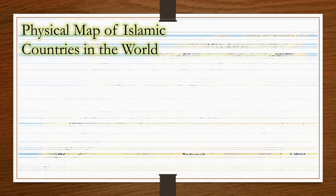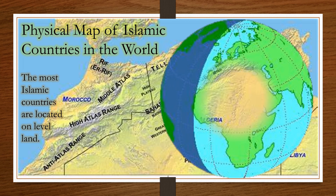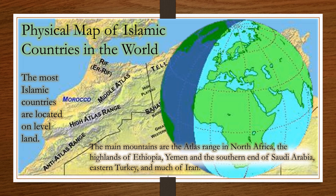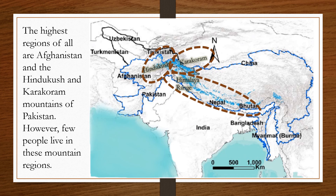Physical map of Islamic countries in the world. Most Islamic countries are located on level land. The main mountains are the Atlas Range in North Africa, the highlands of Ethiopia, Yemen, and the south end of Saudi Arabia, eastern Turkey, and much of Iran. The highest regions of all are Afghanistan and the Hindu Kush and the Karakoram mountains of Pakistan. However, few people live in these mountain regions.